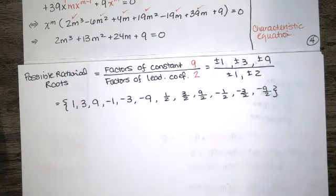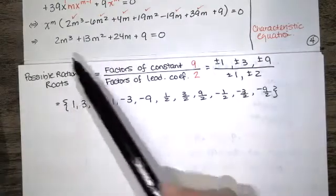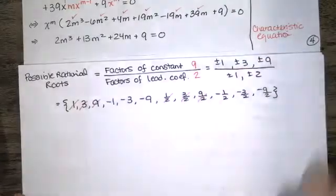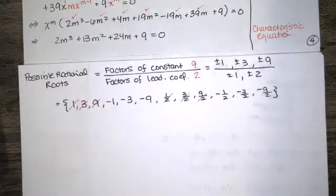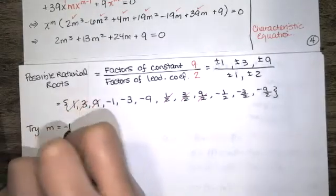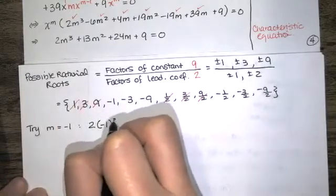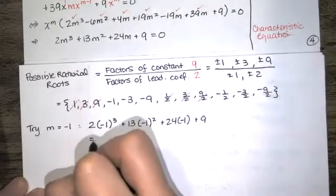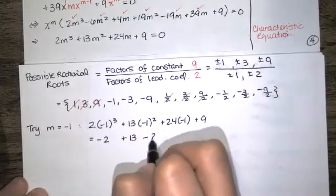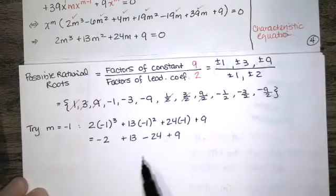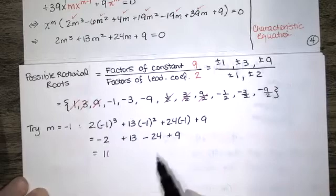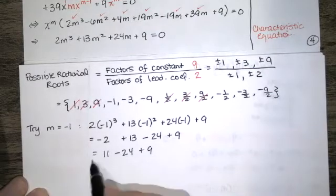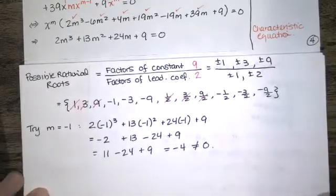Let's pick a value of m to try. Notice that all the coefficients in the polynomial are positive, so a positive m won't give 0 — that rules out the positive candidates. Let's try m equals negative 1: 2 times (negative 1) cubed plus 13 times (negative 1) squared plus 24 times (negative 1) plus 9 gives negative 2 plus 13 minus 24 plus 9, which is negative 4. So m equals negative 1 is not a root.